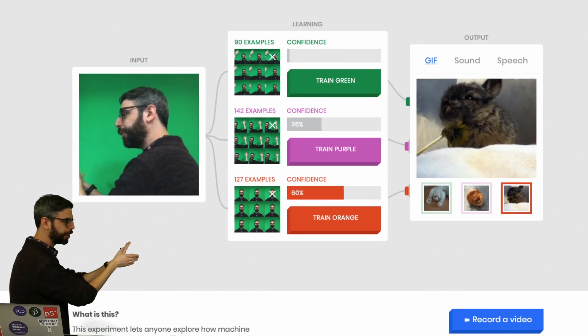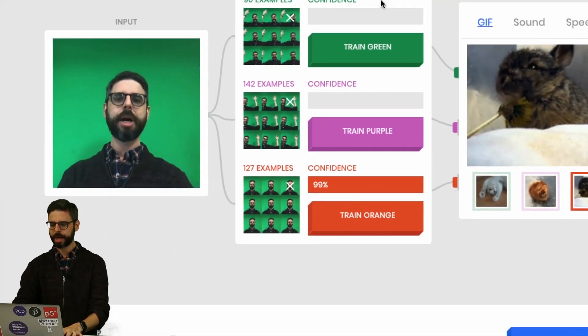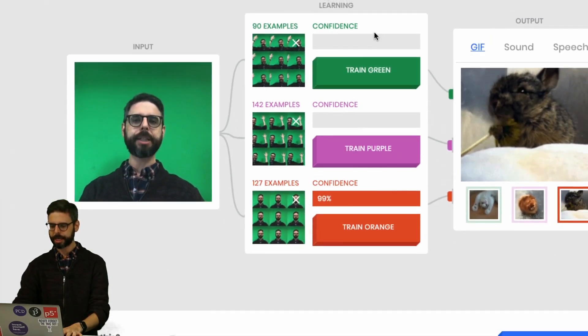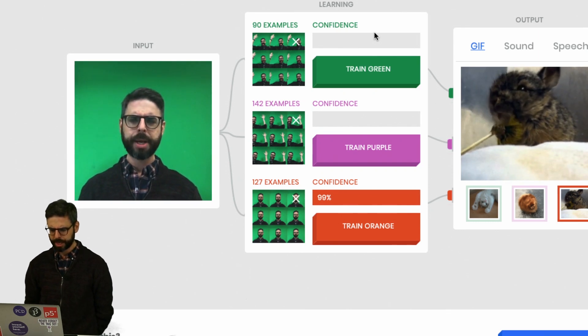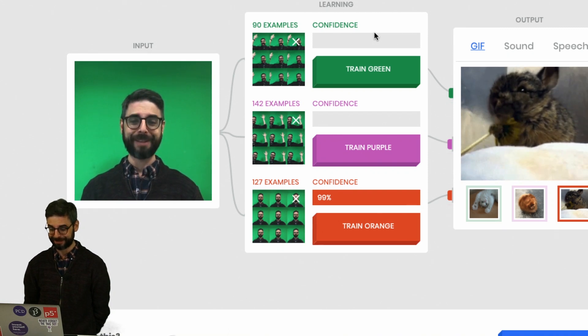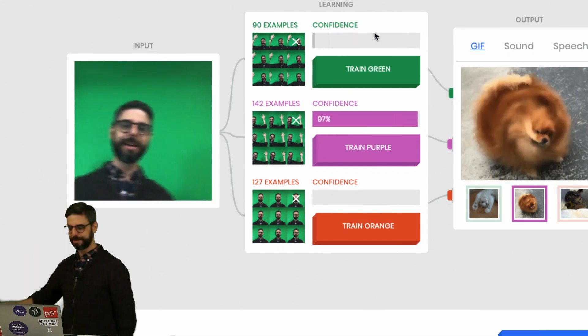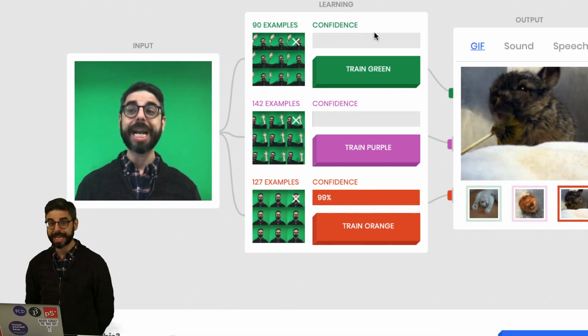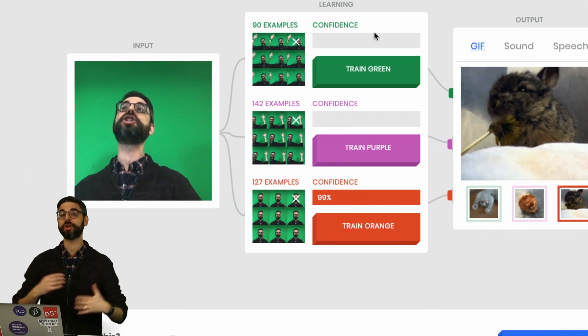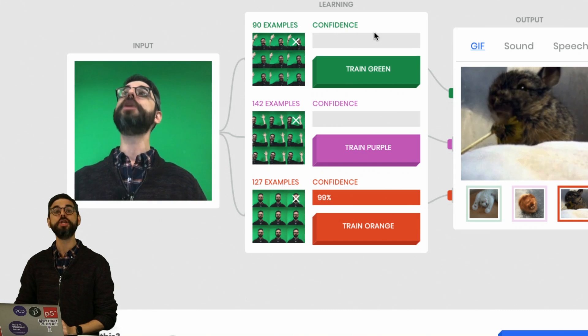This is the teachable machine project. I've already trained this. If I'm just standing here in the middle, it thinks I've trained it to know me standing here with an angry look as orange, my hand to the left as green, my hand to the right as purple.